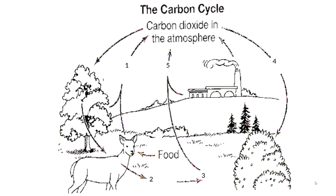Let's try this diagram together. The number one arrow goes from the deer and tree to the atmosphere — this is cellular respiration. The number two arrow goes from the deer into the ground — this is decomposition, which happens when the deer leaves waste and when it dies. The number three arrow goes from the decomposing deer waste to the atmosphere — this is fossil fuels. The number four arrow comes from the atmosphere and goes into the shrub — this is photosynthesis. The number five comes from the factory and the fossil fuels — this is combustion.